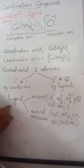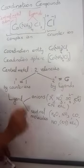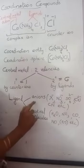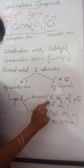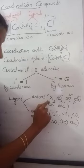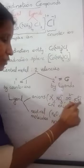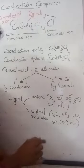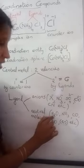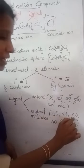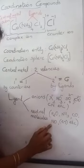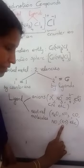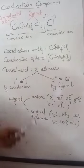Ligands are either anions or neutral molecules containing lone pair electrons. Examples of anionic ligands are halides — fluoride, chloride, bromide, iodide — as well as nitrate, sulfate, oxalate, cyanide, etc. Neutral molecules which contain lone pair electrons are also ligands. Examples include water, ammonia, carbon monoxide, nitrosyl (nitric oxide), and en (ethane-1,2-diamine), etc.